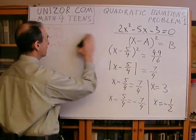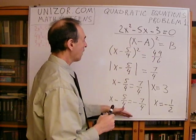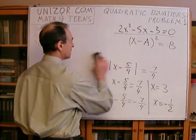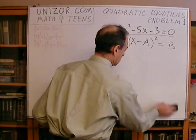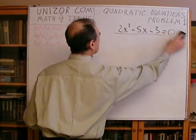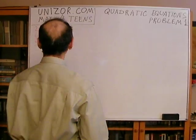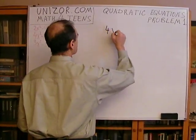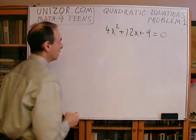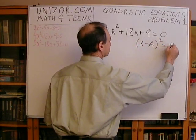Both are solutions. Using this transformation — transforming into the form x minus a squared equals b — allows us to very easily solve the problem. We will continue doing exactly the same thing with the other couple of problems. Next problem is 4x squared plus 12x plus 9 equals zero. My purpose is to reduce it to the form x minus a squared equals b. Let's see what happens.